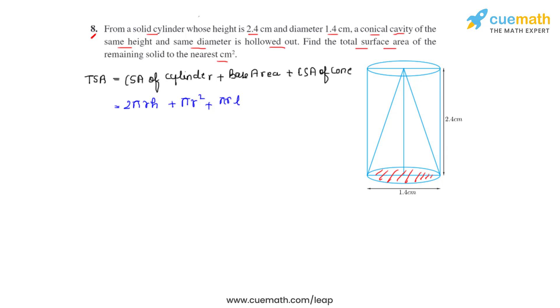Now l represents the slant height which is not given in the question and which we have to find. This is 90 degrees, and the radius for the conical part will be half the diameter, which is 1.4 centimeters divided by 2, and that will be 0.7 centimeters. The total height of the cone will be equal to the total height of the cylinder, which is 2.4 centimeters.